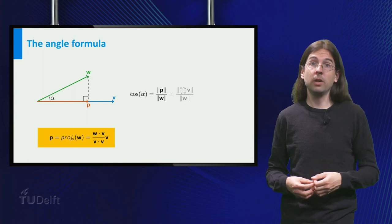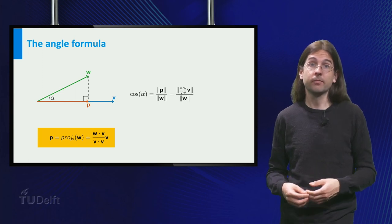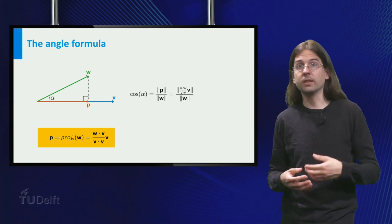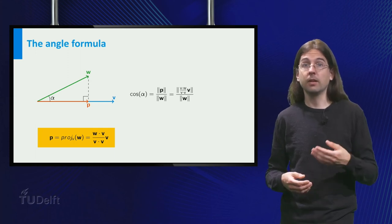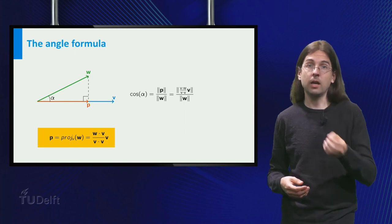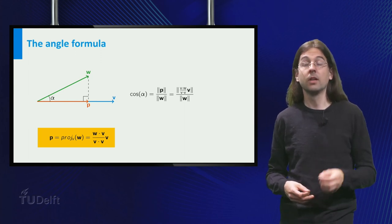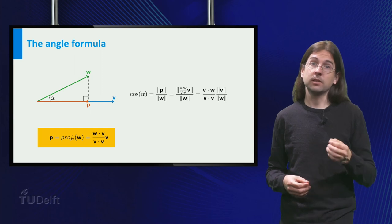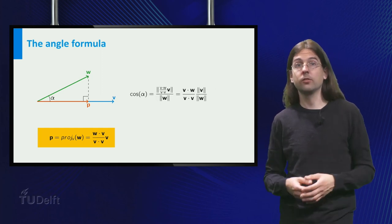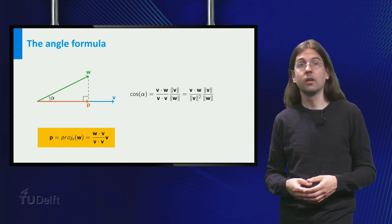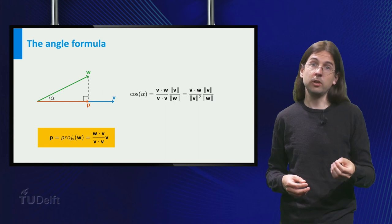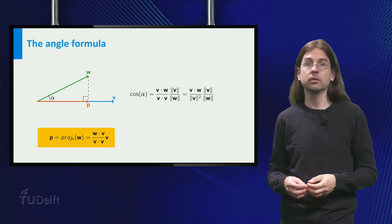Now we plug in the formula for p, and as multiplying a vector by a scalar multiplies the length by this scalar, we can take the scalar v dot w over v dot v outside the norm. If we finally realize that v dot v equals the length of v squared, we obtain the desired formula. Cosine of the angle between two vectors equals their dot product divided by the product of their norms.